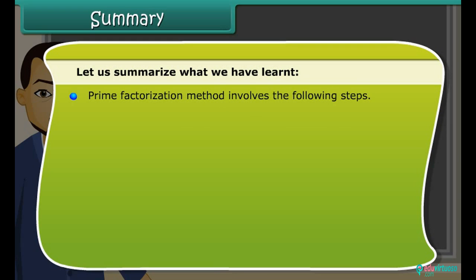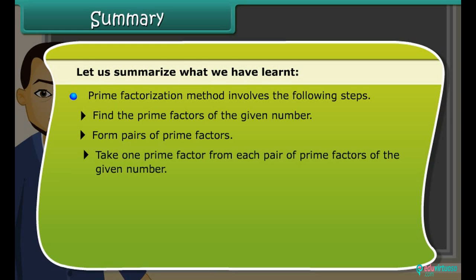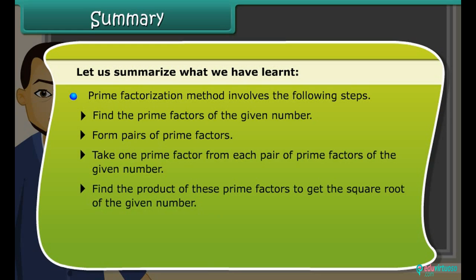Prime factorization method involves the following steps: Find the prime factors of the given number. Form pairs of prime factors. Take one prime factor from each pair of prime factors of the given number. Find the product of these prime factors to get the square root of the given number.